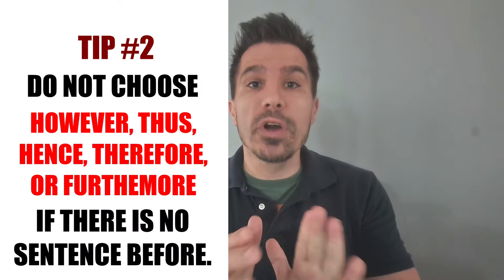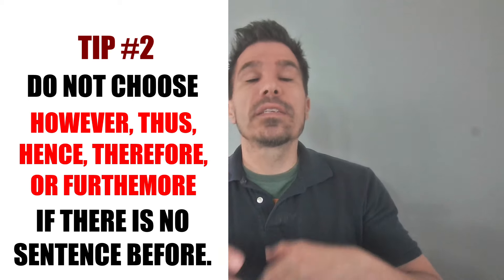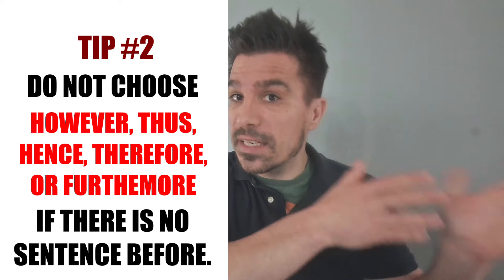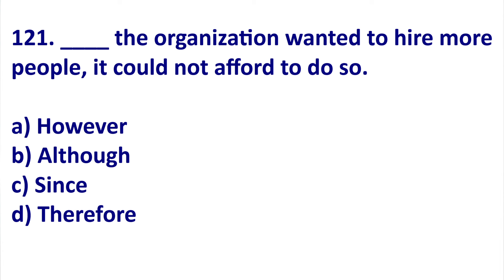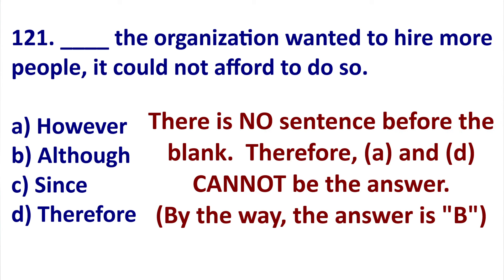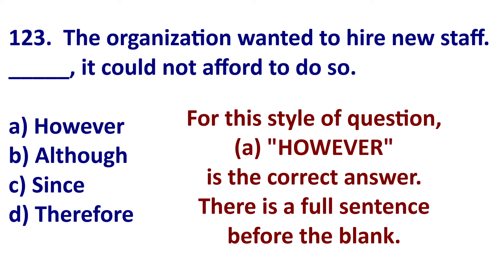Tip two: do not choose 'however,' 'therefore,' 'moreover,' 'once,' 'thus,' or 'furthermore' to start a sentence if there is no sentence before it. Let's look at this TOEIC question: 'Blank the organization wanted to hire more people, it could not afford to do this.' Immediately eliminate A and D because there's no sentence before the blank, so you can't use 'however' or 'therefore.' However, if there were a sentence before the blank, you could use 'however.'